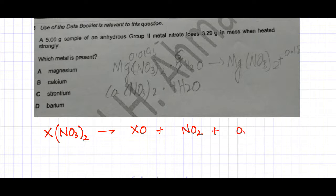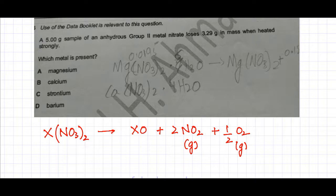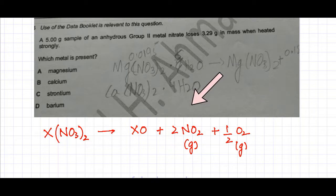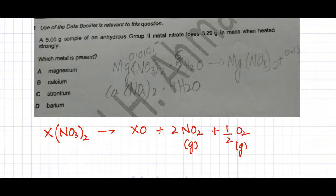It's going to decompose and produce a metal oxide, an NO₂ molecule and an O₂ molecule. So oxygen gas and NO₂ gas are going to be produced, and if you balance it, half O₂ and 2 NO₂. So this is your balanced equation. These substances are gaseous, so if it loses mass that means the gaseous substances are escaping.